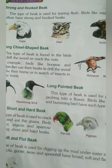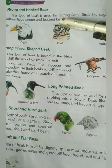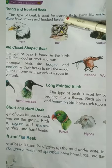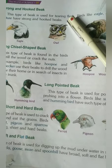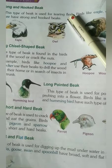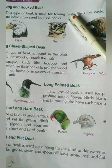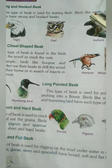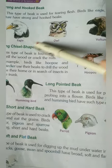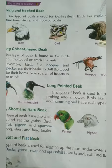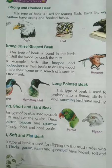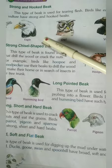Now, different types of beaks. The first one is the strong and hooked beak. This type of beak is used for tearing flesh. For example, eagle, owl, and vulture have a long and hooked beak.